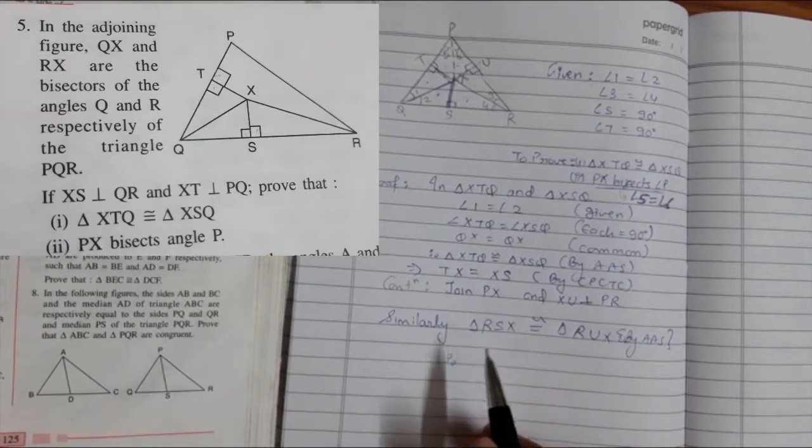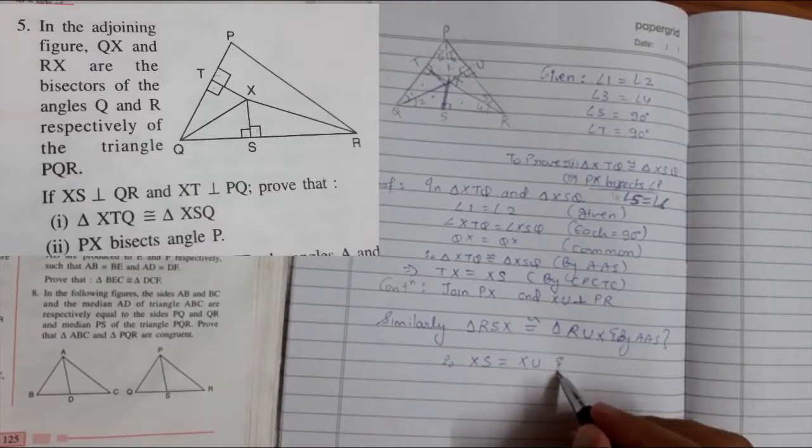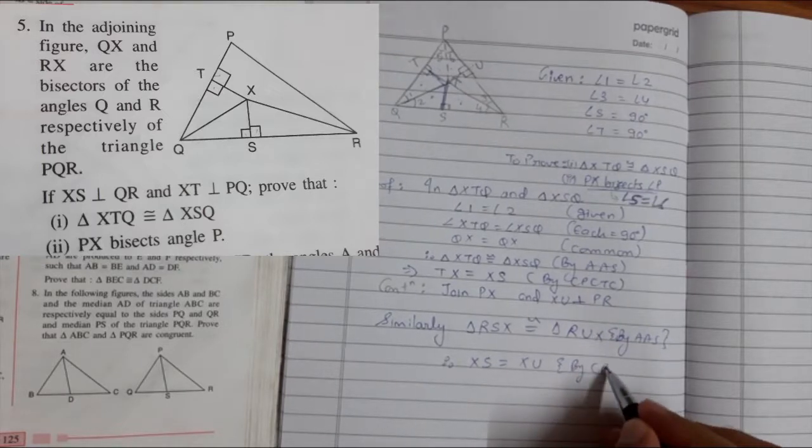So these two triangles are congruent. Therefore we can say XS is equals to XU by CPCTC.